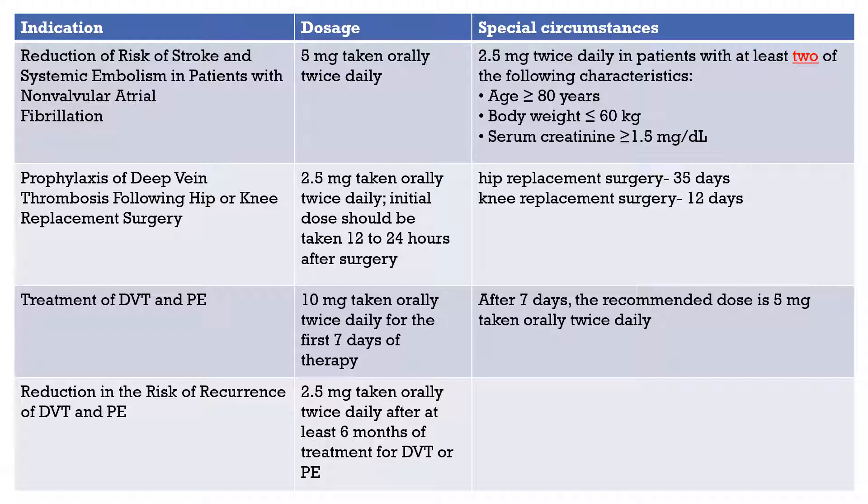For treatment of DVT and PE, the recommended dose is 10 milligrams taken orally twice daily for the first seven days of therapy. After those seven days, the recommended dose is 5 milligrams taken orally twice daily. For reduction in the risk of recurrence of DVT and PE, the recommended dose is 2.5 milligrams taken orally twice daily, after at least six months of treatment for DVT or PE.